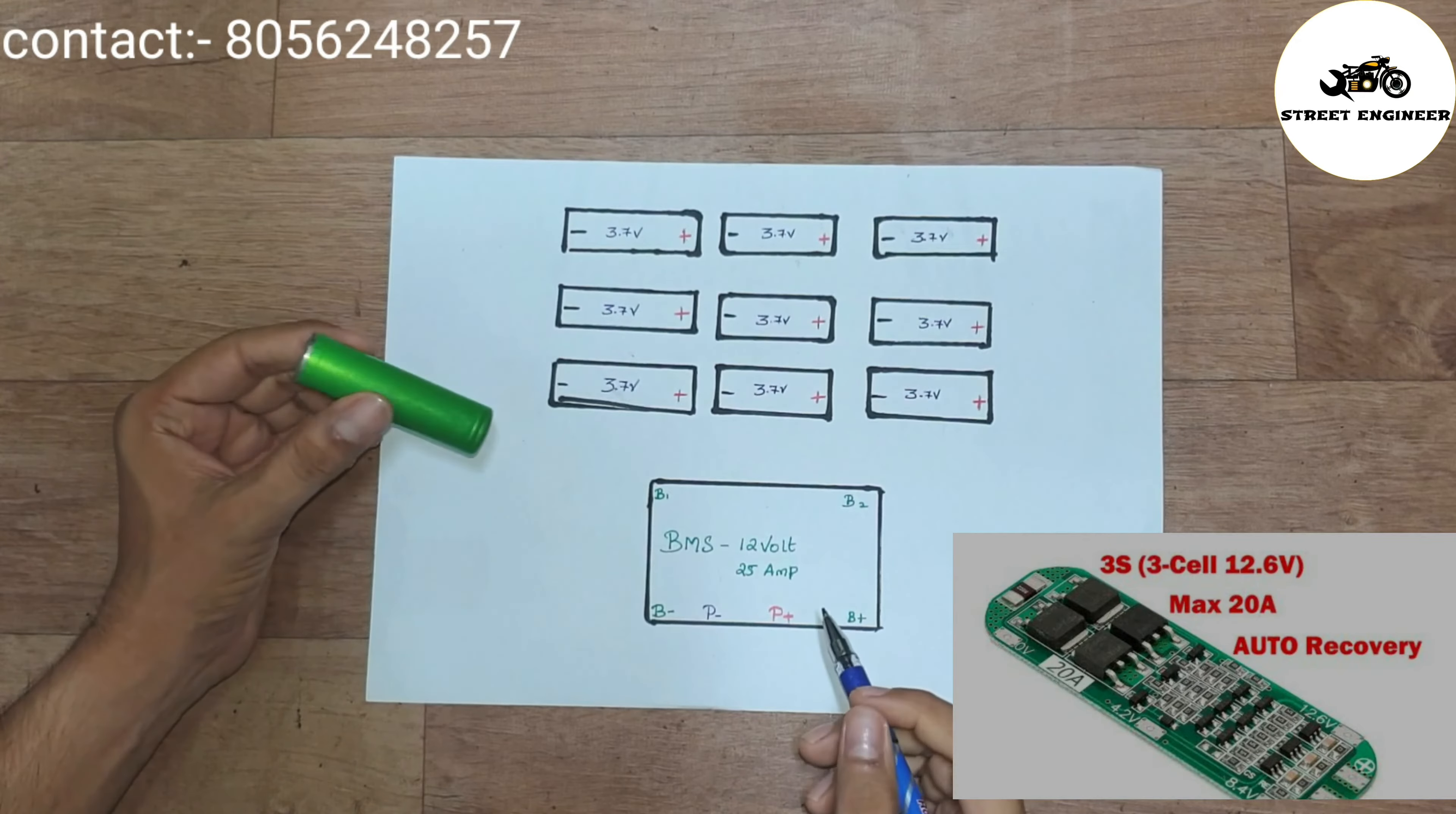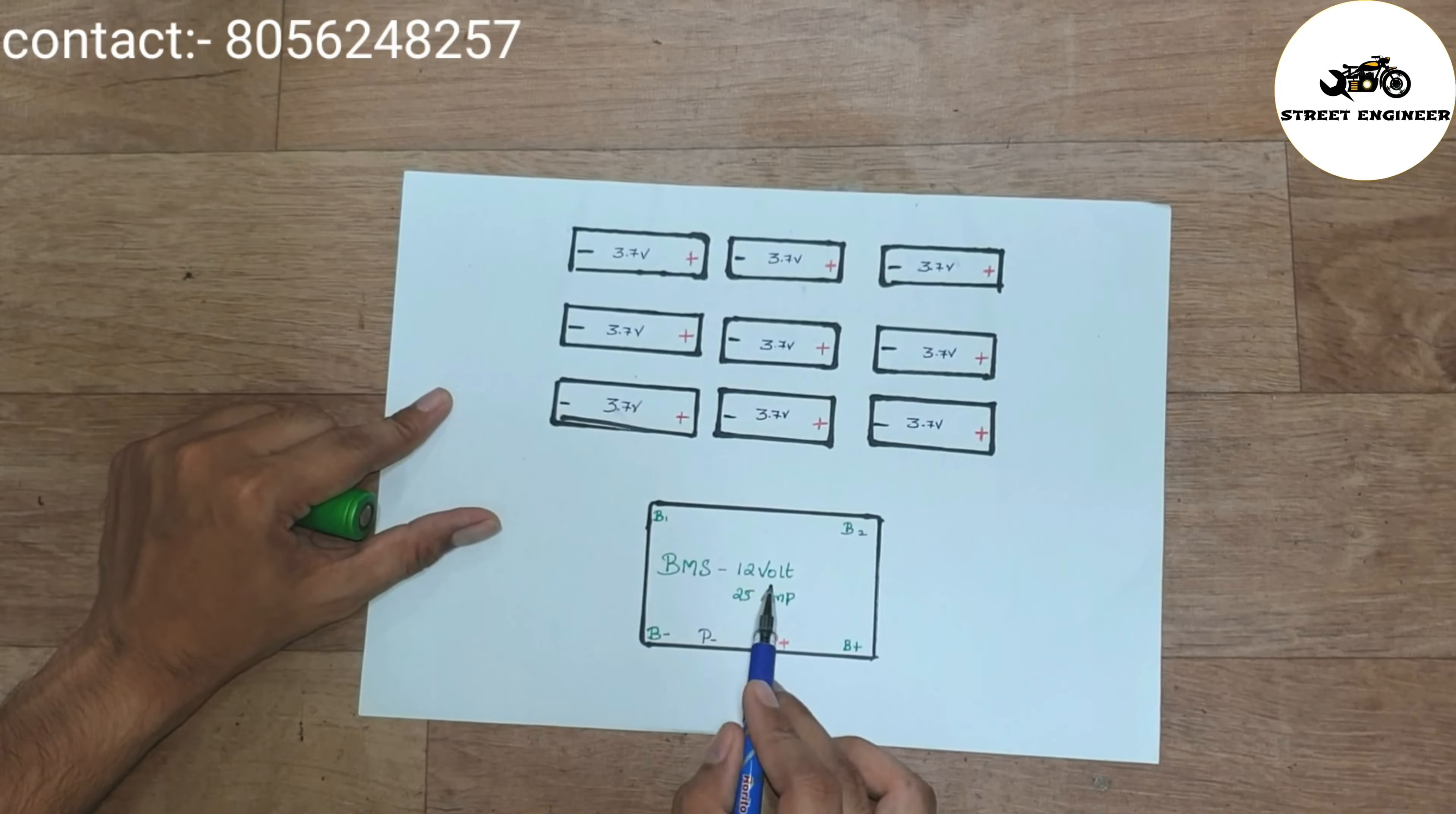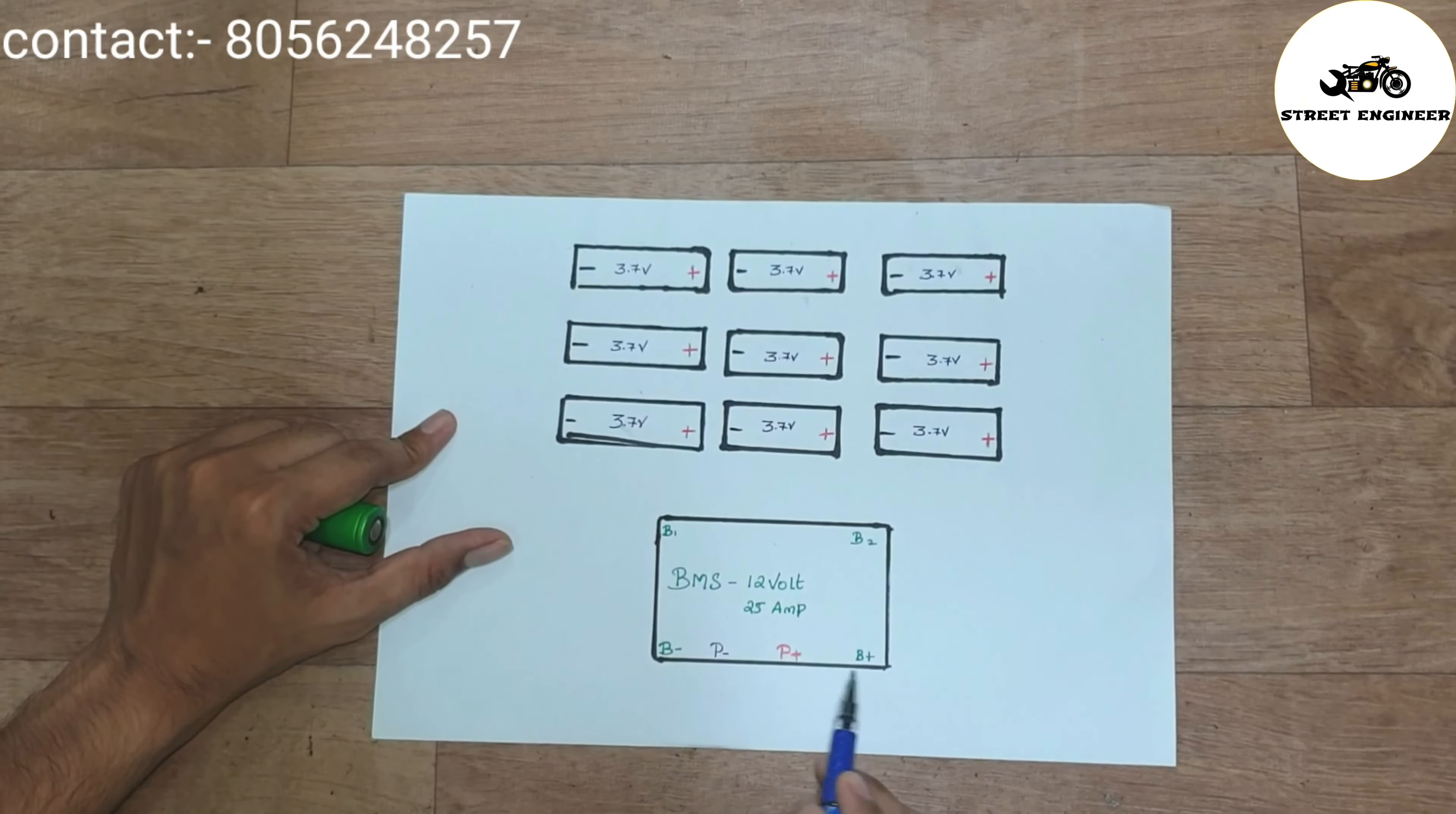This is the BMS. This BMS will protect our batteries while charging and discharging. This BMS specification is 12V and 25A. Here is the B-, B+, B2, B1, P- and P+.